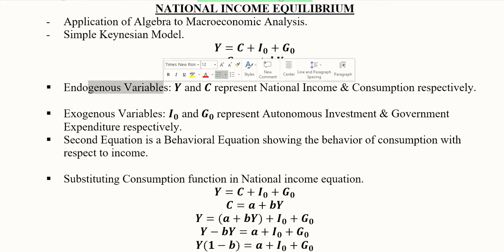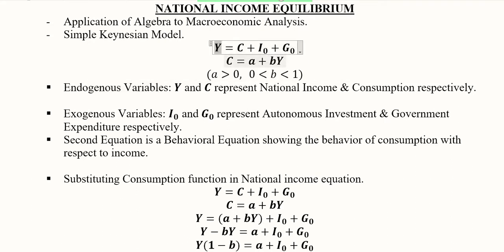The endogenous variables are Y and C because they are determinable by using the given information - this equation and that equation. Then we have exogenous variables determined from outside the model: I₀ and G₀, the autonomous investment levels and government expenditure which is also considered to be autonomous.